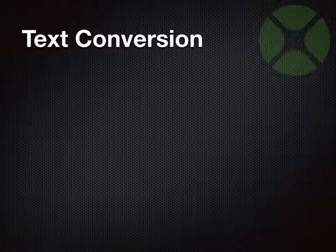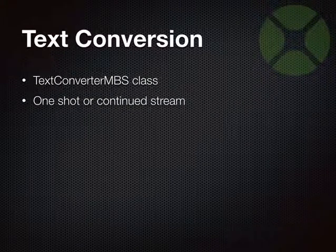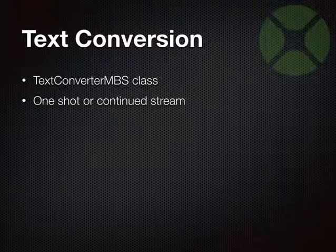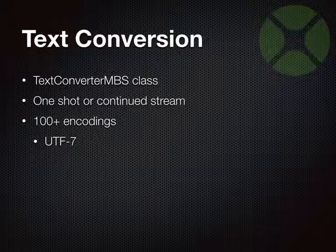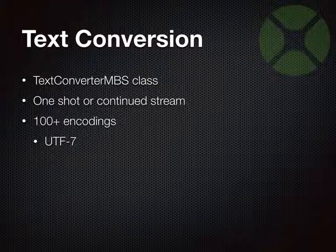Next we have a class for text encoding conversions — TextConverterMBS, based on the iconv library. It allows you to convert a piece of text or do stream conversion, so if you're reading from one document and writing to another you can transcode on the fly. It supports over 100 text encodings. We mainly made this to support UTF-7 for a customer — there's a 7-bit version of UTF. If you need any of those exotic encodings not built into Xojo, this class may be helpful.